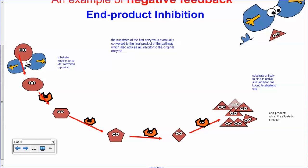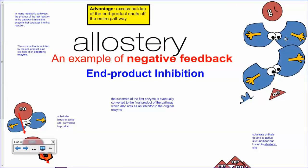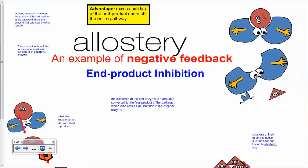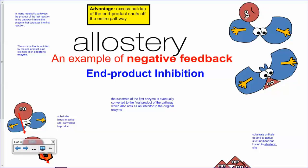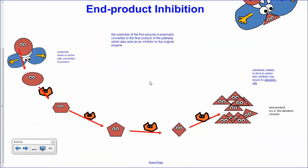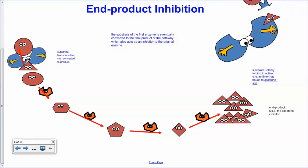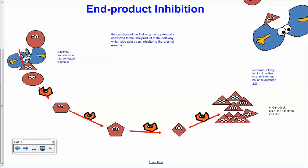Here's a particular pathway: a substrate binds to the first enzyme, gets converted, binds to the next enzyme, gets changed slightly, and so on until you end up with an end product. If there's too much end product, it can come back and inhibit the first enzyme. This is just like non-competitive inhibition — there's another site called the allosteric site. The end product binds to this allosteric site, causes a conformational change in the enzyme's structure, and then the substrate can no longer bind, stopping the entire pathway.